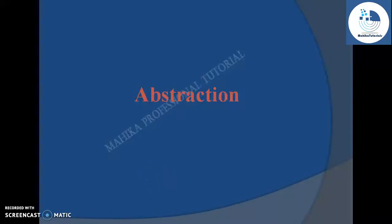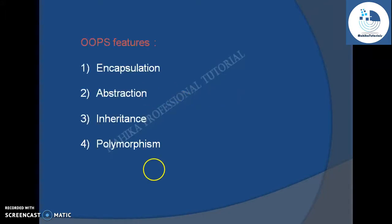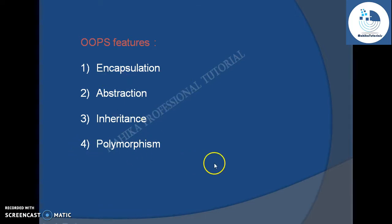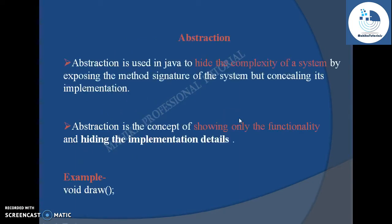Welcome to this tutorial on abstraction in Java. As we know, there are four OOP features: encapsulation, abstraction, inheritance, and polymorphism. In this tutorial we are going to see abstraction in detail. Abstraction is that OOP feature which can be used to hide the complexity of a system by exposing the method signature only.